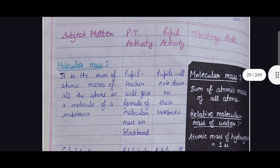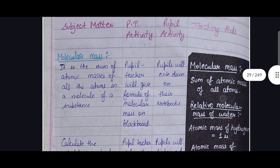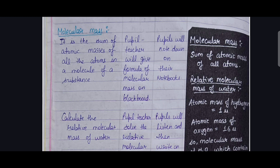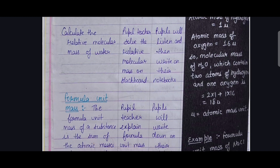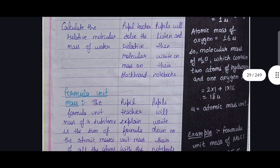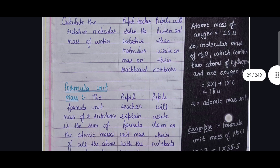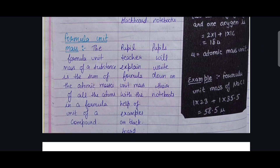Next, subject matter is molecular mass — its definition and explanation. Pupils will listen and write in their notebooks. Blackboard work is used as a teaching aid, showing the definition and calculation of the relative molecular mass of water. The PT solves the relative molecular mass problem. Next is formula unit mass — its definition; the PT explains and pupils write in their notebooks. All of this is done using blackboard work.